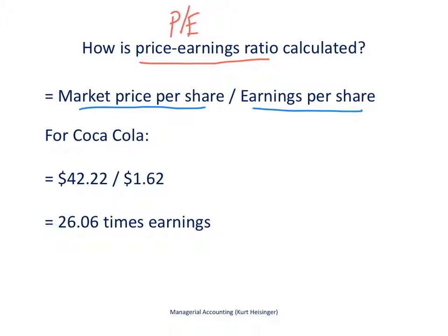For Coca-Cola, the market price per share was $42.22 at the end of their 2014 fiscal year, and the earnings per share was $1.62. The earnings per share is typically found at the bottom of the income statement. If you look up Coca-Cola's 10-K report and look up the income statement, you go to the very bottom and you'll see earnings per share data. If you can't find it there, then it's typically in the notes to the financial statements. So we take $42.22 and divide that by $1.62 as the earnings per share, and that gives us a PE ratio of 26.06 times earnings.